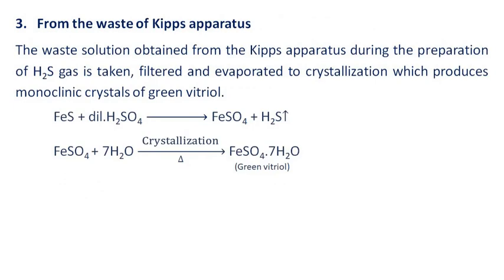From the waste of Kipp's apparatus: the waste solution obtained from the Kipp's apparatus during the preparation of hydrogen sulfide gas is taken, filtered, and evaporated to crystallization, which produces monoclinic crystals of green vitriol.